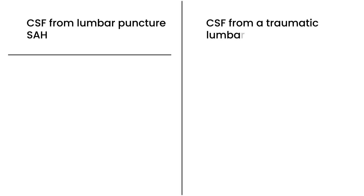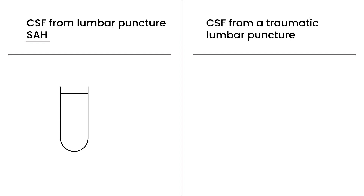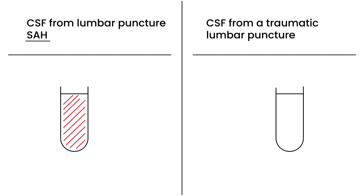Think about this for a second. A person has subarachnoid hemorrhage — you do the lumbar puncture, obtain a sample of CSF, and put it in a test tube. Is it going to have blood in it? Yes, it will, because the person has subarachnoid hemorrhage. Now, let's say you do a lumbar puncture on a person who doesn't have subarachnoid hemorrhage, but during the procedure you cause some trauma and bleeding. Is that person going to have blood in the CSF? Yes, they will. So how do you know if it's a subarachnoid hemorrhage or a traumatic lumbar puncture?